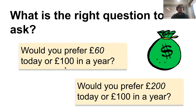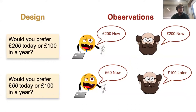We want to make sure we ask good questions. We might think about asking, would you want £200 today or £100 in a year? These questions aren't equally good. Asking £200 today versus £100 in a year is not going to be very informative — almost everyone is going to take £200 now. But something like £60 today versus £100 in a year will get different responses and discriminate between participants, giving us a more pertinent question and a better design.